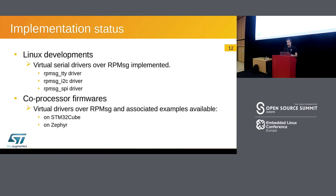What is the implementation status today? On the Linux side, we have already implemented RPMessage TTY, RPMessage I2C, and RPMessage SPI. We have started upstreaming RPMessage TTY. On the co-processor firmware side, we have examples available. We have not shared them yet, but virtual drivers exist for our STM32Cube solution and also in Zephyr.